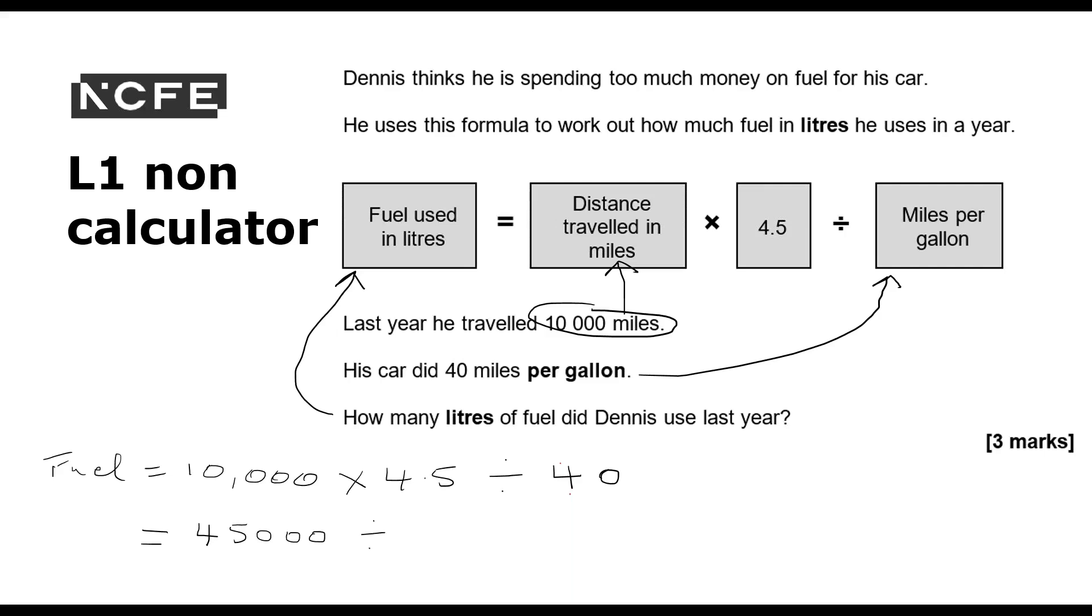Divided by 40. Dividing by 40, I do not know my 40 times table, so I can divide this by 10 and divide this by 10 and calculate 4,500 divided by 4. That's far easier to do. I can write it out in a standard way, 4s into 4 go 1, 4s into 5 go 1, remainder 1, 4s into 10 go 2, remainder 2, 4s into 20 go 5.